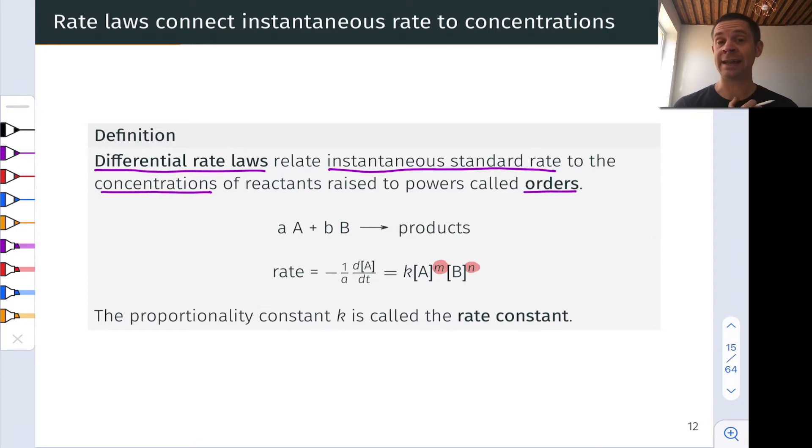And these exponents, m and n, are the kinetic orders. m is called the order of A because it's the exponent on the concentration of A, and n is the order of B because it's the exponent on the concentration of B.